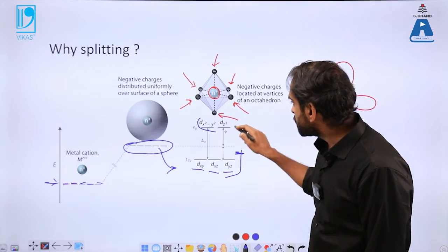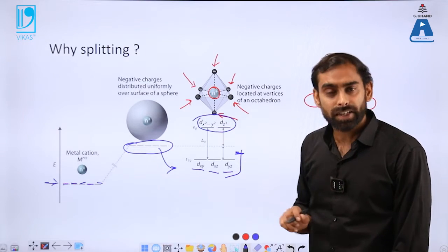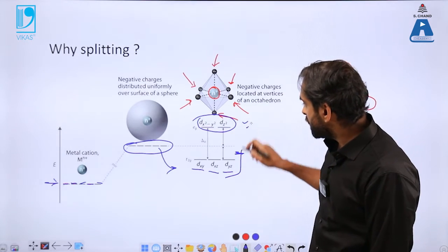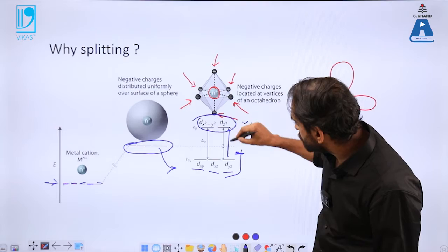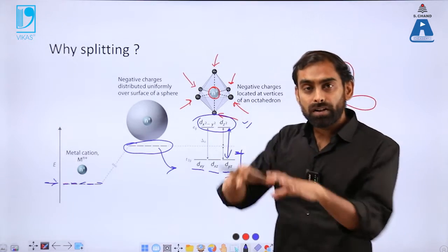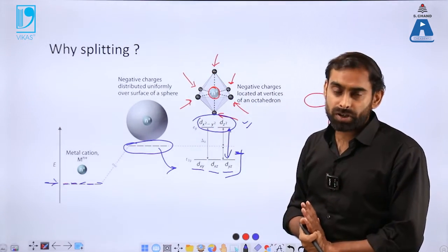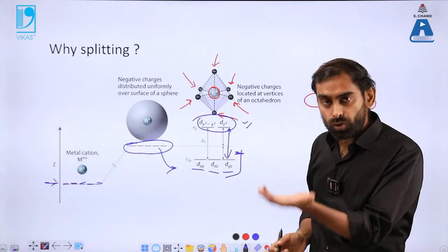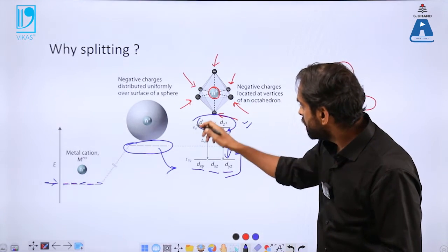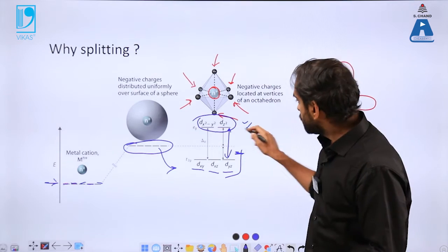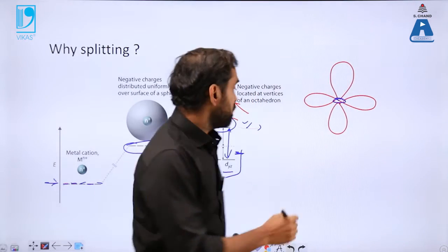And two of them, x square minus y square and z square, they have higher energy. So there is now a gap which is created between two and three d sub shells or d orbitals. So two of five d orbitals have got higher energy.